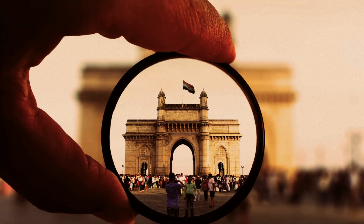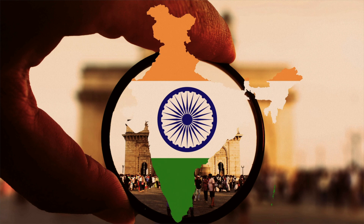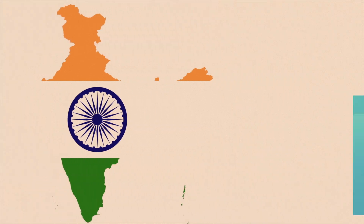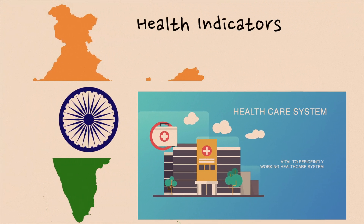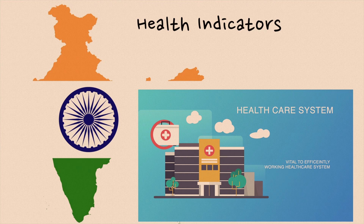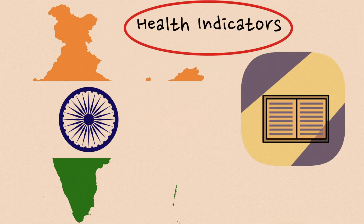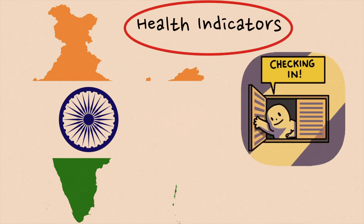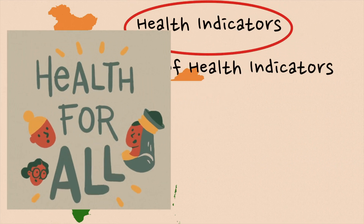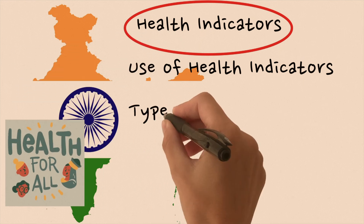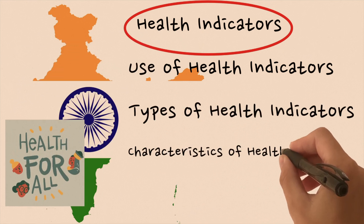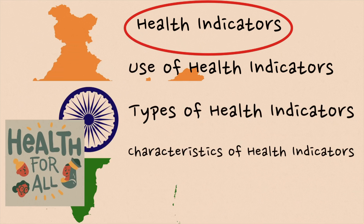Now a question may arise: what signals out the health situation of a country? Here comes the importance of health indicators. Today we are going to talk about health indicators and their role in shaping the health status of a country, types of health indicators, and the characteristics of health indicators.